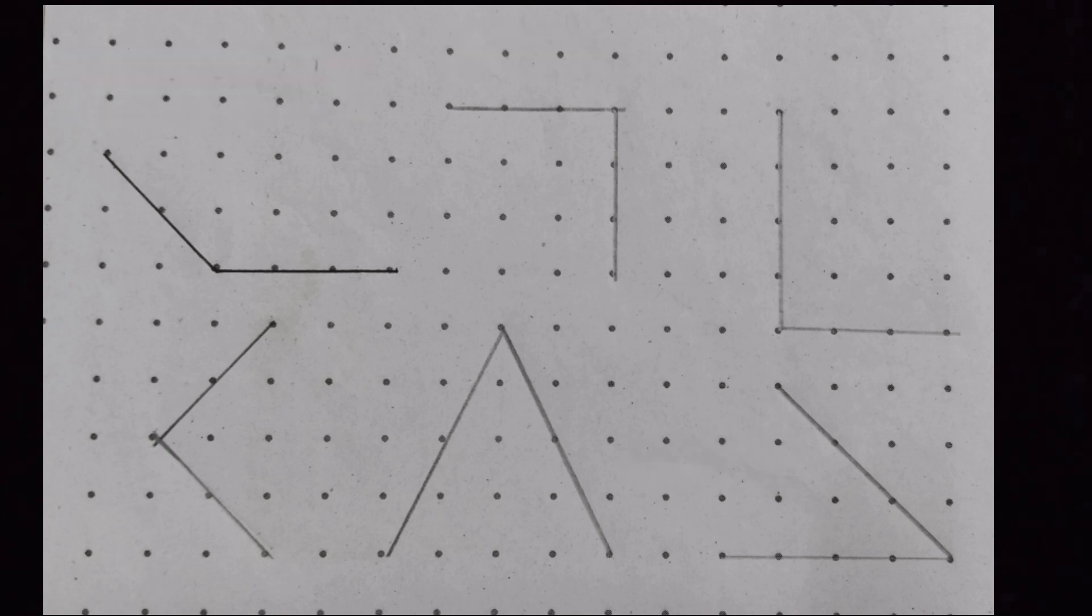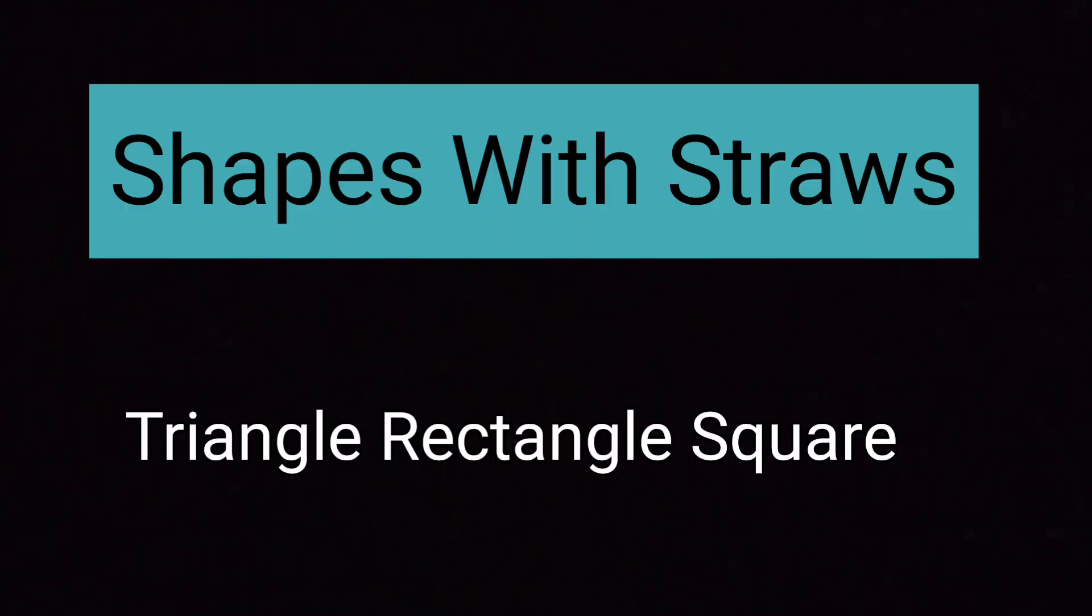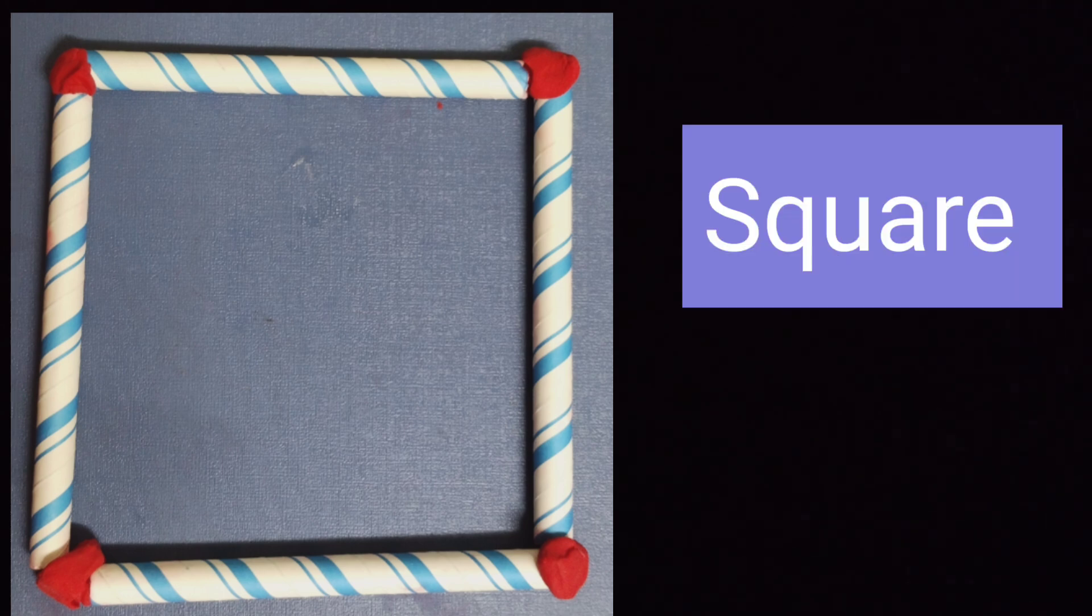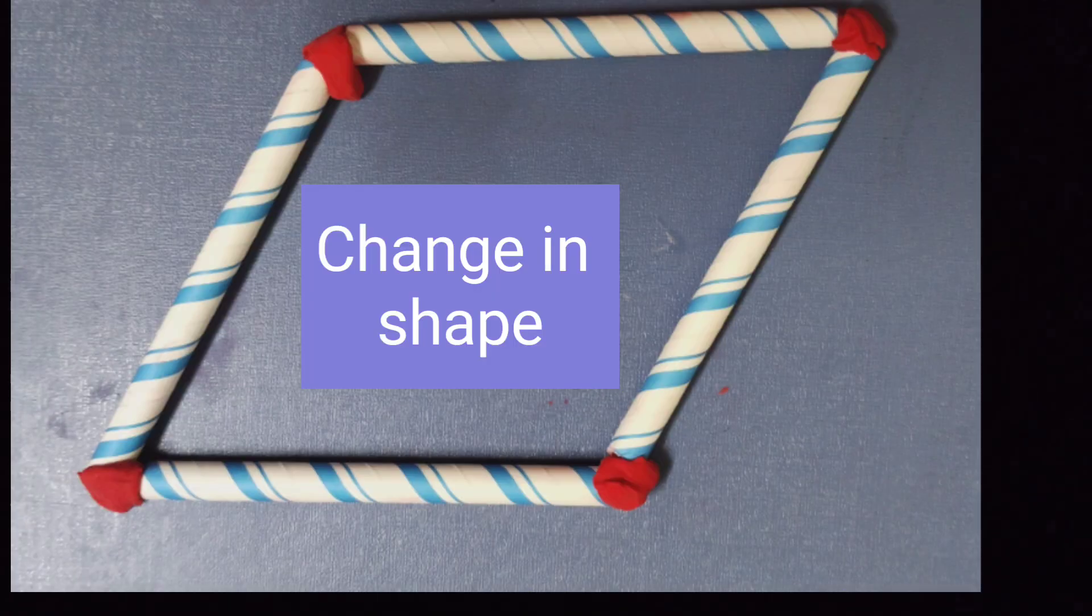Next, you have shapes with straws. So, you have to make a triangle, a rectangle with straws of different size and clay. And then, you have to gently push one of the sides and see if there is any change in the shape or not.